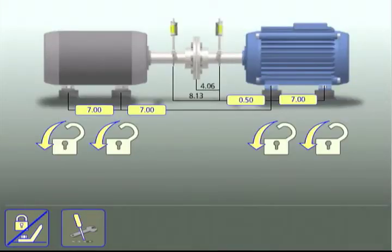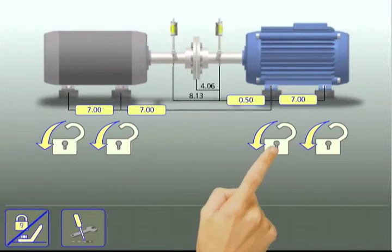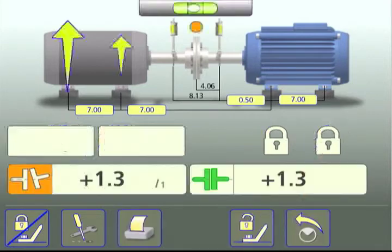Next, select which feet to lock by touching the applicable lock icons. The results are automatically calculated and the moves for the unlocked feet displayed.